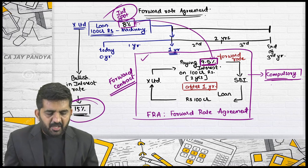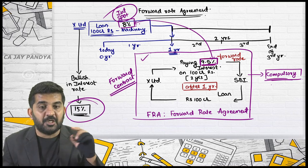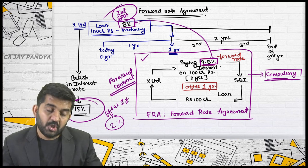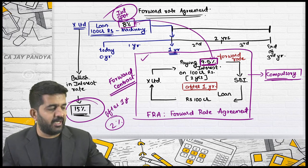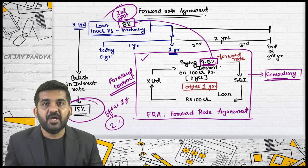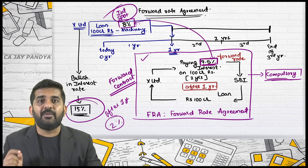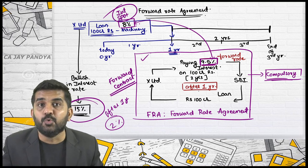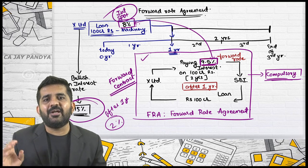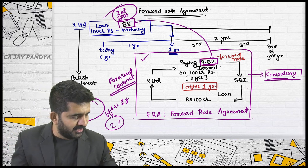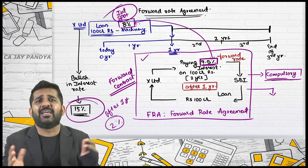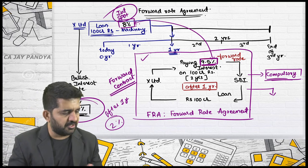If after one year the rate became 2%, then also you will have to take a loan at 9.5% — 100 crore rupees at 9.5% interest — for the period of two years, with everything happening one year after today. This is a forward contract but the underlying asset is somewhat different, which is nothing but interest rate.